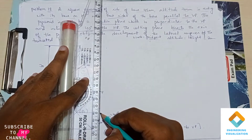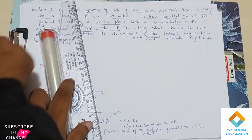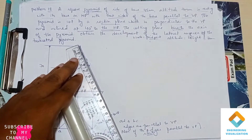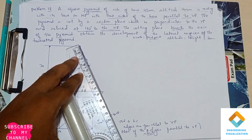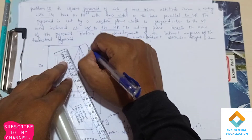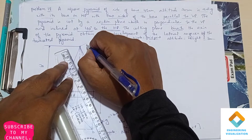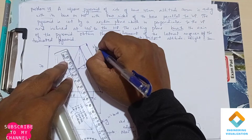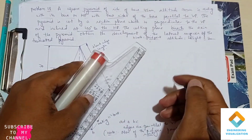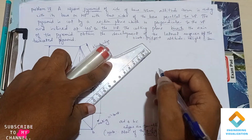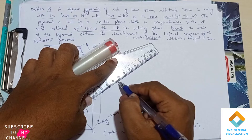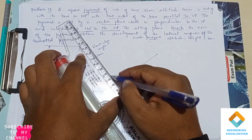Now project upward from the horizontal line to the XY line. From that XY point of intersection, join to the apex — this gives your true slant length. Measure the length: it is 77mm. That is your slant length. Draw and mark that as 77mm.